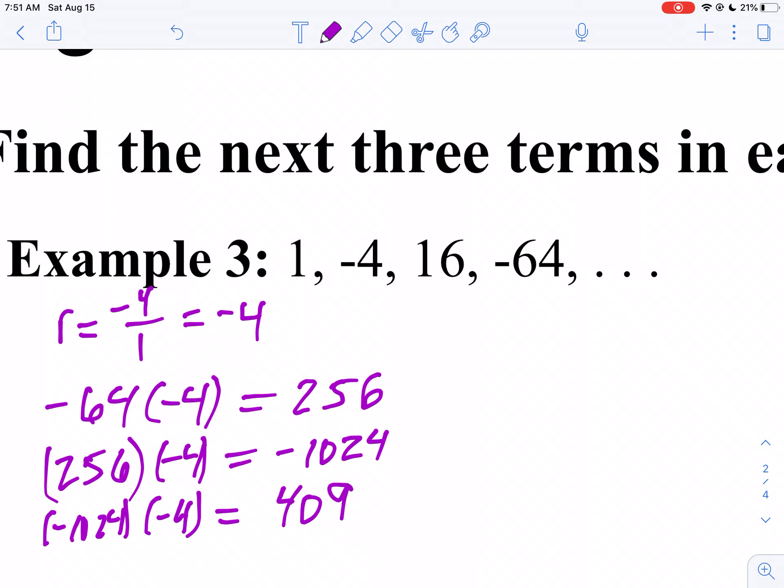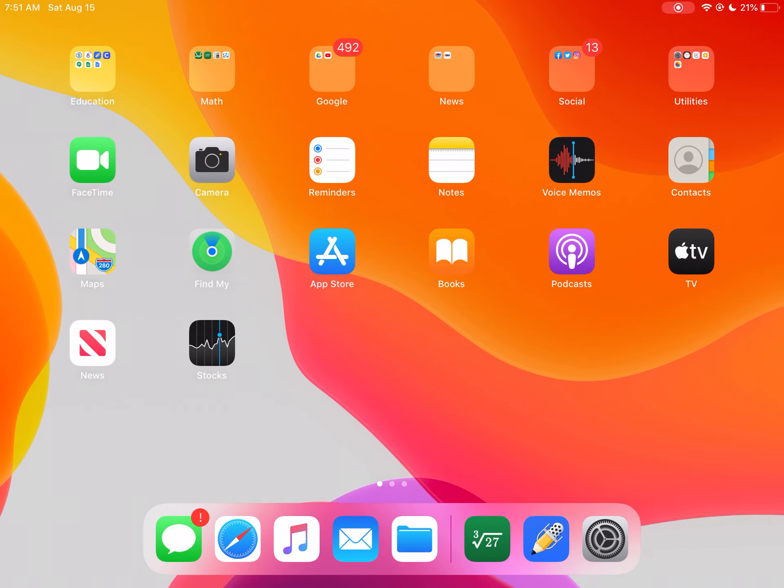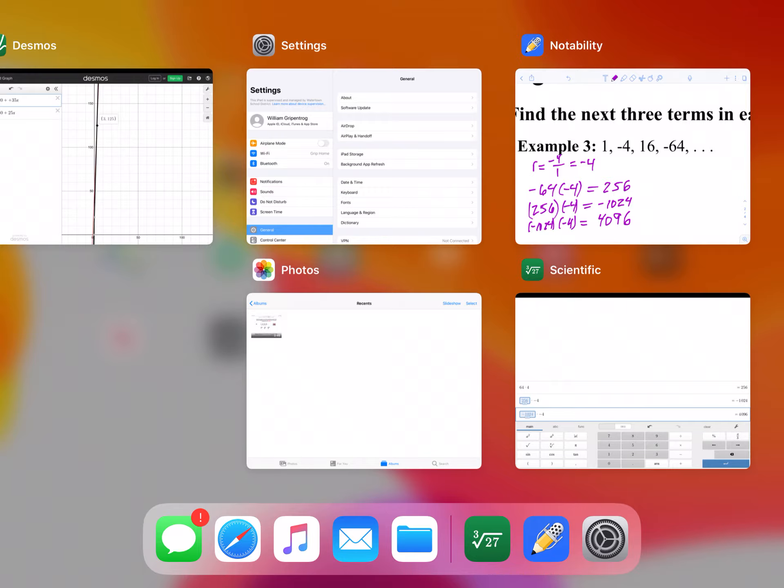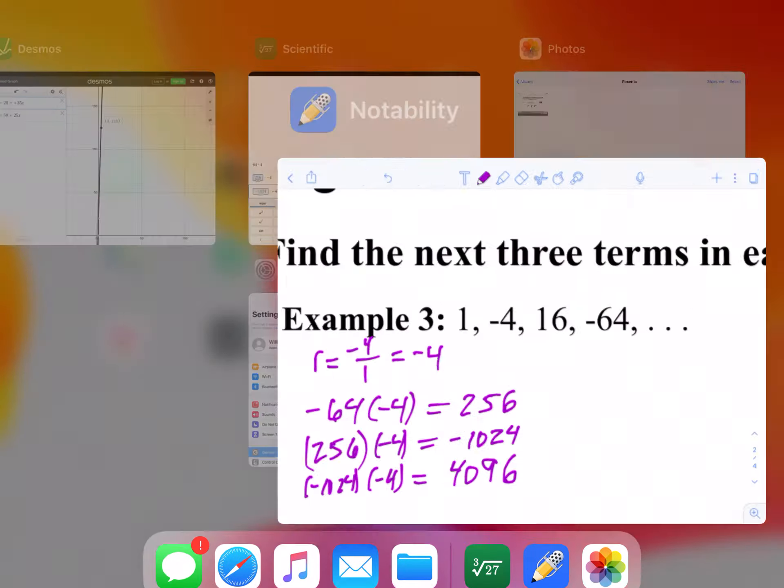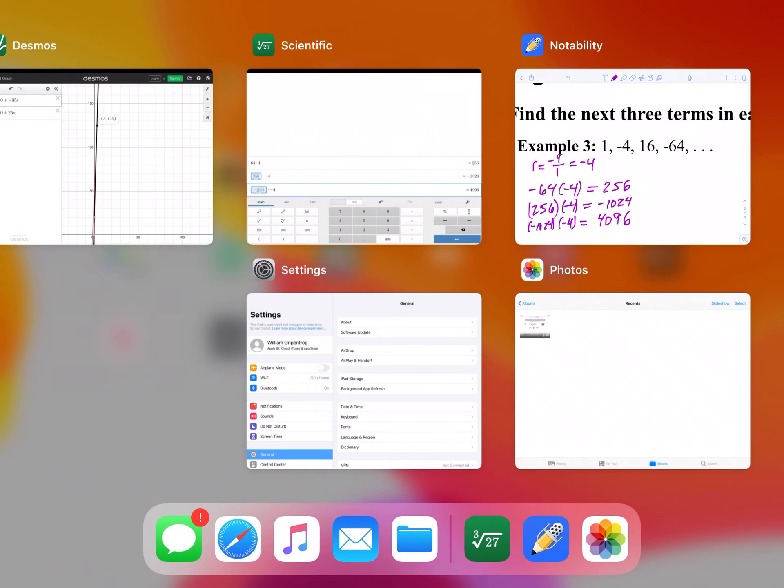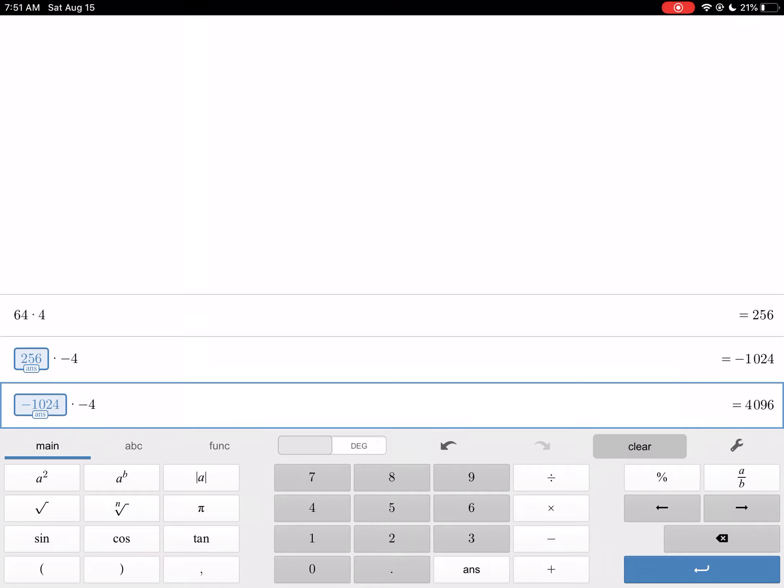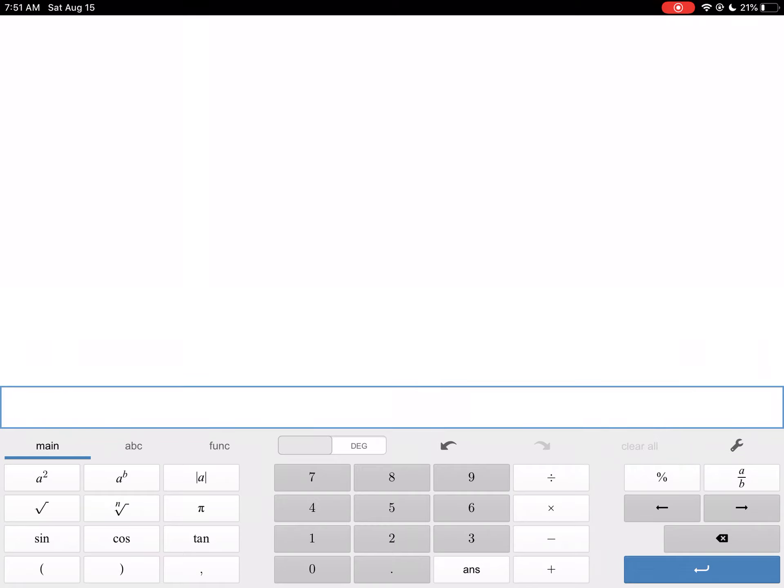Now you can generate this sequence on your calculator. I'll show you how that works. You type in your first term, which is one, and you press enter.